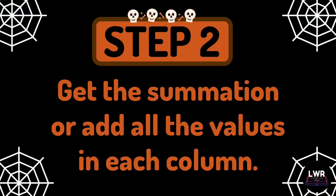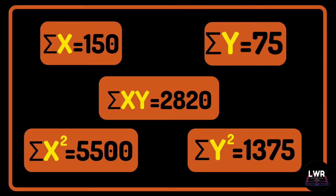Get the summation or add all the values in each column. Summation of x is equal to 150. Summation of y is equal to 75. Summation xy is equal to 2,820. Summation x squared is equal to 5,500. And summation of y squared is equal to 1,375.